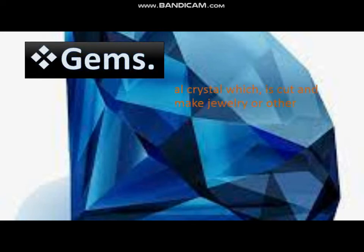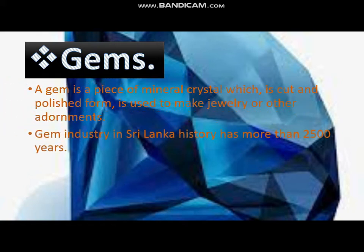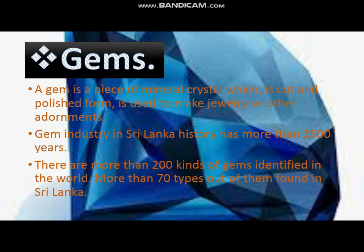Gems. A gem is a piece of mineral crystal which is cut and polished and used to make jewelry or other adornments. The gem industry in Sri Lanka has more than 2,500 years of history. There are more than 200 kinds of gems identified in the world, and more than 70 types out of them are found in Sri Lanka.